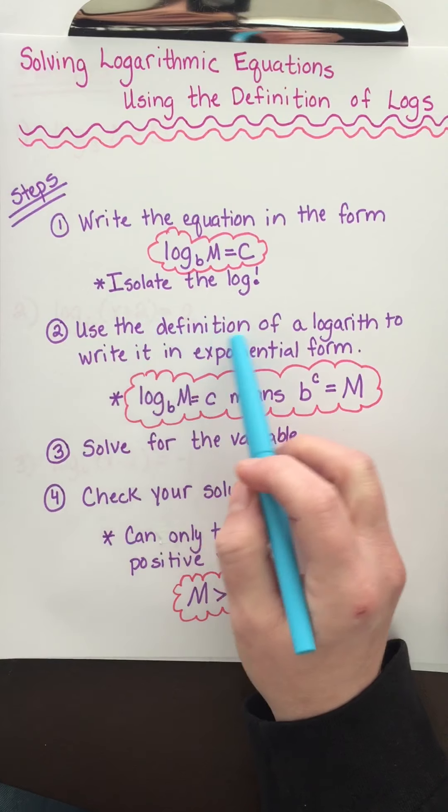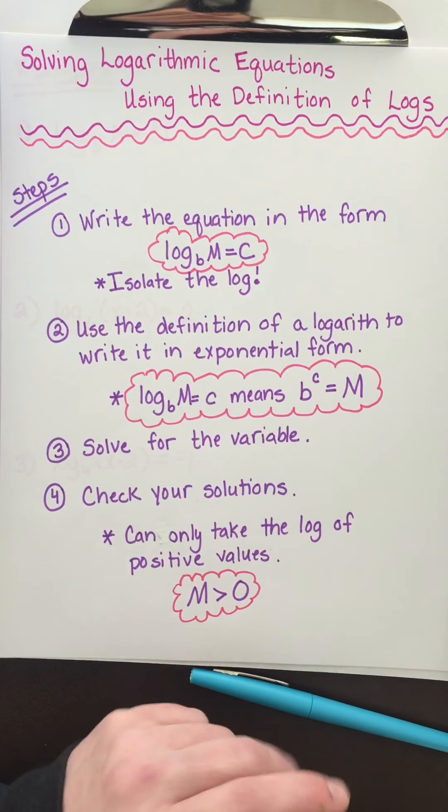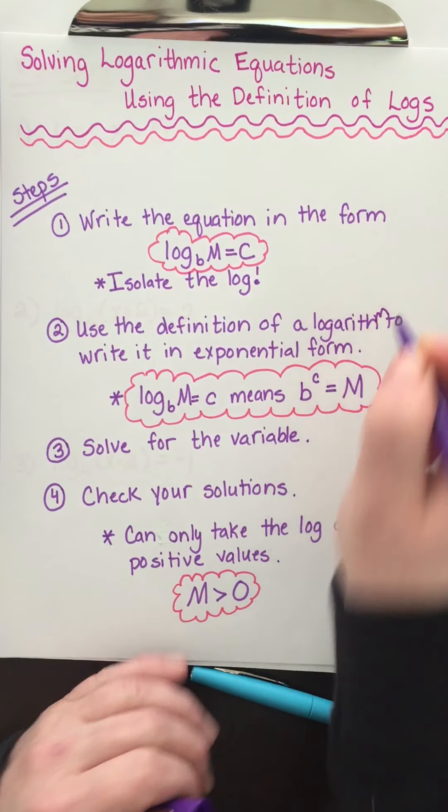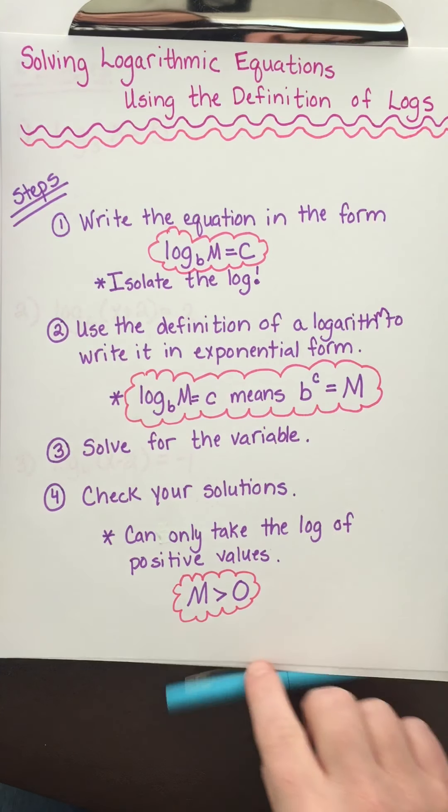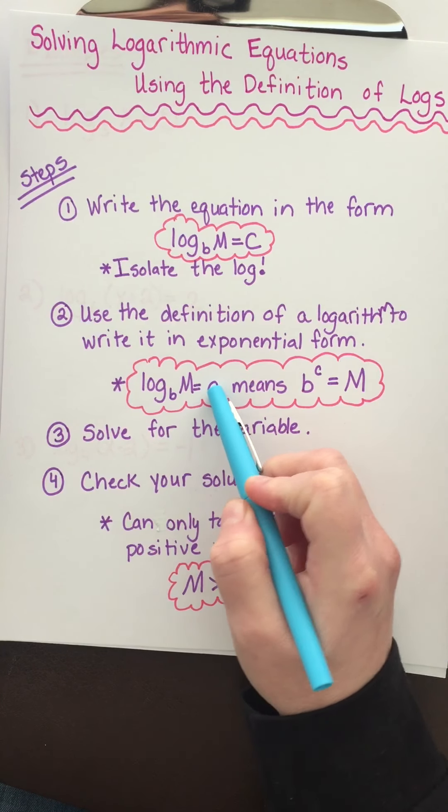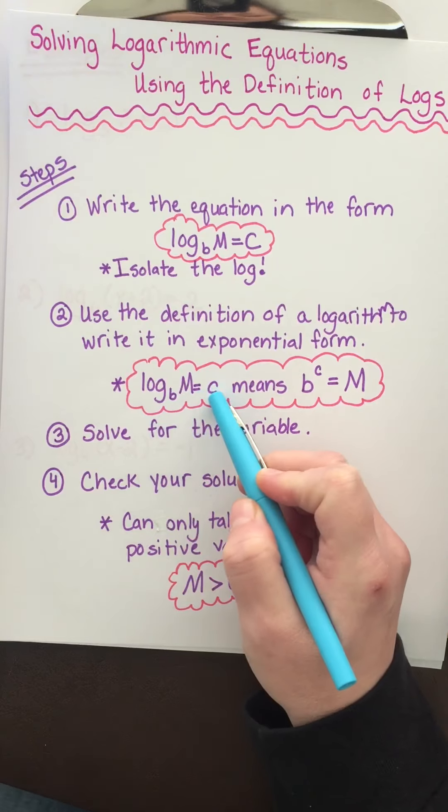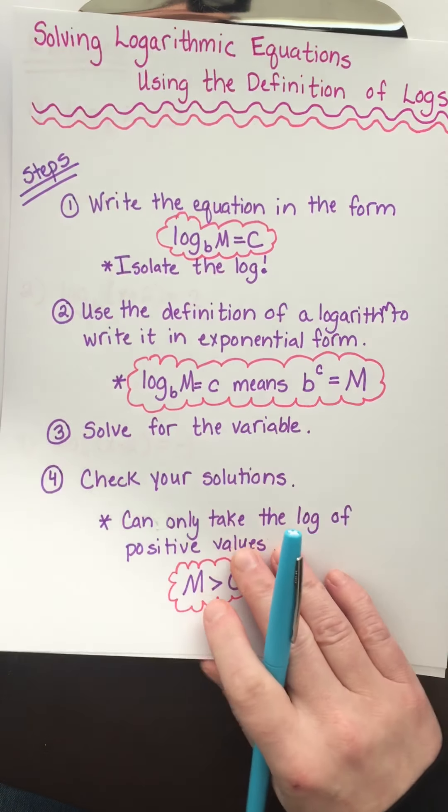The second step is to use the definition of a logarithm to write it in exponential form. If you have log base b of m equals c, that means b to the c equals m. We'll change it from logarithmic form to exponential form.